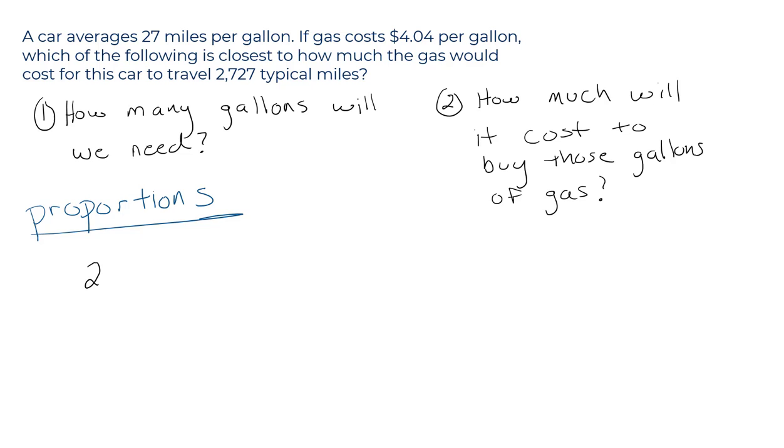So the ratio of miles, 27 miles, to one gallon of gas is the same as, is proportional to 2,727 miles to a number we don't know. So let's call it x gallons of gas. One gallon can get you 27 miles. The question is, how many gallons of gas would you need to travel 2,727 miles?